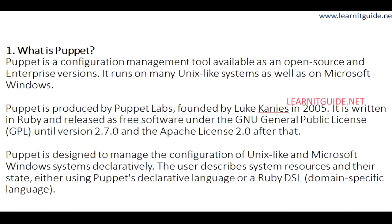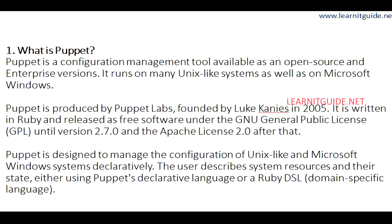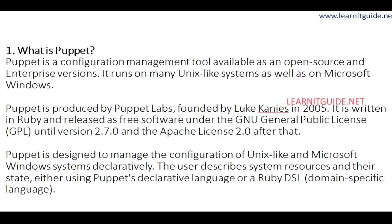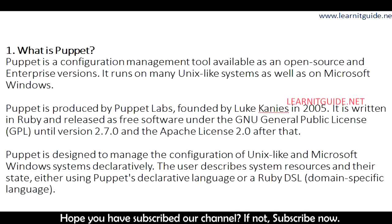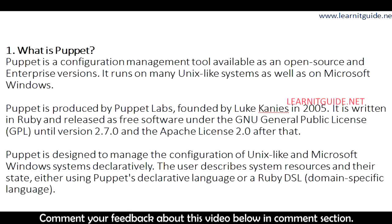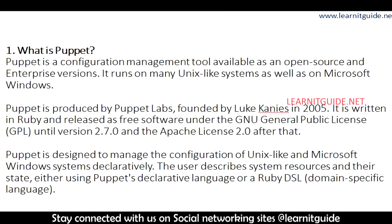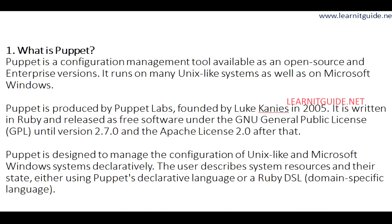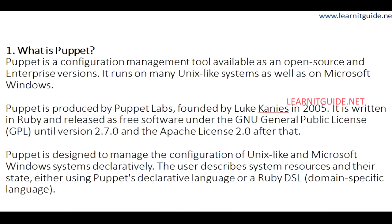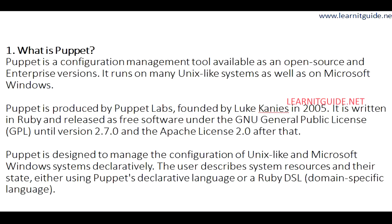So what is Puppet? Puppet is a configuration management tool which is available as an open source as well as enterprise version. It runs on many Unix-like systems as well as on Microsoft Windows. Puppet is produced by Puppet Labs and was founded by Luke Canis in 2005. It is written in Ruby language and released as free software under the GNU public license.